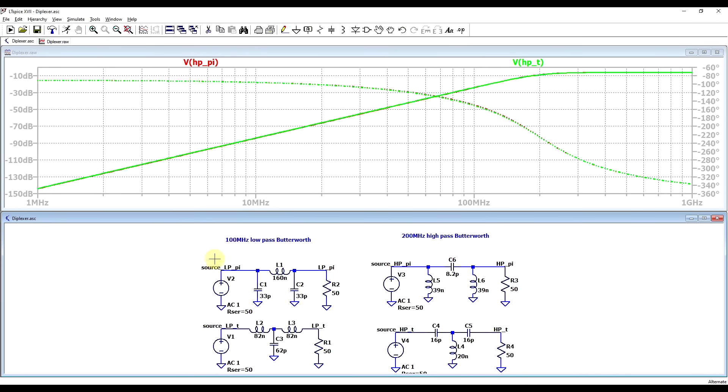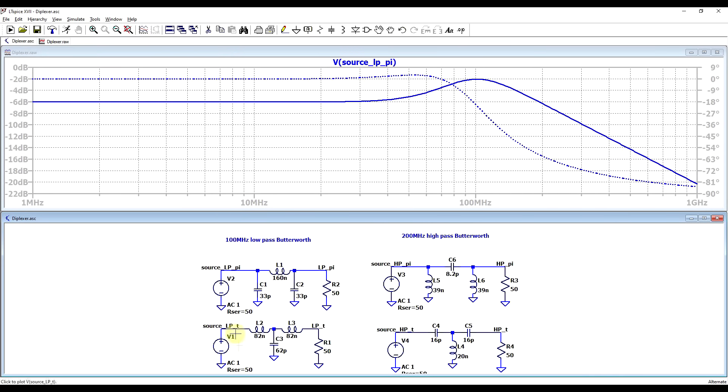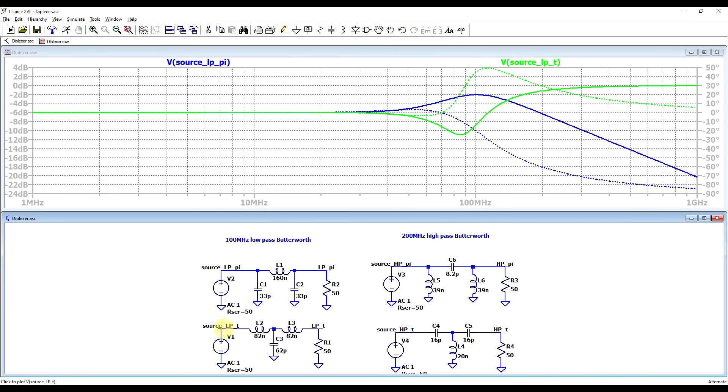However, if we now look on the input side, so starting with the low-pass filter, we can see that the signal on the input is completely different. The pi filter, in blue, will exhibit high attenuation at high frequency, characteristic of a low impedance, whereas the T filter, in green, exhibits a high impedance, so low attenuation.